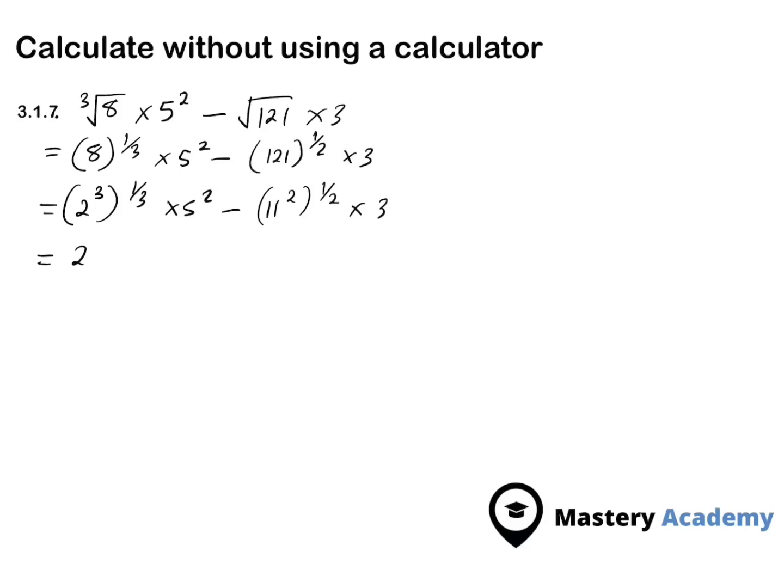Therefore, now I'm going to have 2 to the power of 3 times 1 over 3 times 5 to the power of 2 minus 11, 2 times 1 over 2 times 3. Therefore, the exponents are going to cancel out and I'm left with 1. Same thing goes with this one. They cancel out and I'm left with 2 to the power of 1 times 5 to the power of 2 minus 11 to the power of 1 times 3.